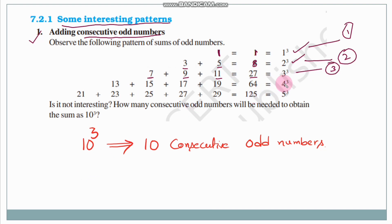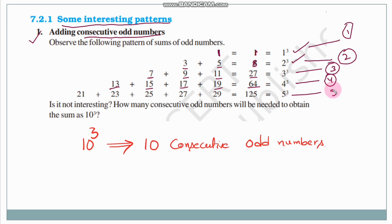For 4³ = 64: it equals 13+15+17+19, using 4 consecutive odd numbers. For 5³ = 125: it equals 21+23+25+27+29, using 5 consecutive odd numbers. So how many consecutive odd numbers are needed for 10³? We need 10 consecutive odd numbers.